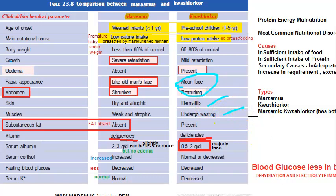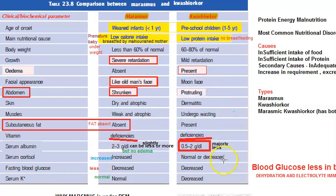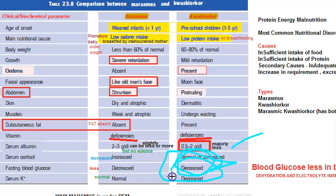The skin will show dermatitis and muscles will have wasting. However, subcutaneous fat is present because the child is eating fat normally. There is also vitamin deficiency. Serum albumin is less, and fasting blood glucose is also decreased.